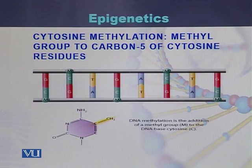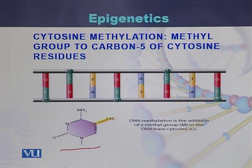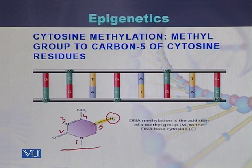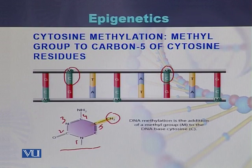Cytosine methylation means that a methyl group is attached at carbon number five of the cytosine. This is the structure of cytosine: carbon number one, two, three, four, and carbon number five. At carbon number five, a methyl group — CH3 — is attached. This is the conversion of cytosine into methylated cytosine. We can see here that cytosine is methylated.